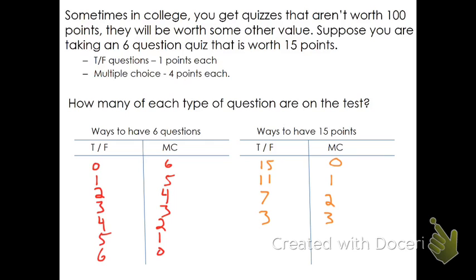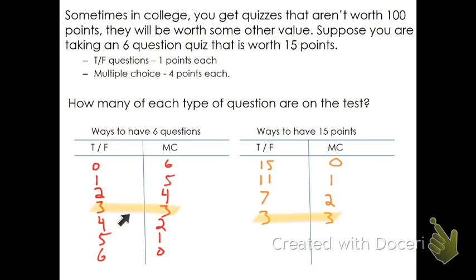What we see is there are a lot of ways to have six questions, and there are also a lot of ways to have 15 points. But what is the solution to the system? That would be the value that satisfies both. If we have three true-false and three multiple-choice, that gives six total questions and 15 total points. So that is the solution to the system.